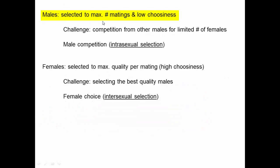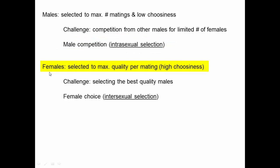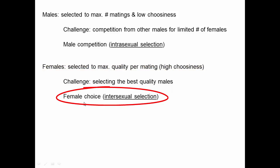So males are selected to maximize the number of matings with low choosiness, but their challenge is competition from all the other males for the limited number of fertile or available females at any particular time. Since all other males are similarly low in choosiness, males mainly face male competition with one another — intrasexual selection. For females, being selected to maximize quality per mating and having high choosiness, their challenge is not finding males because they're available, but selecting the best quality males from all those available — leading to female choice and intersexual selection, where females deal with the opposite sex in terms of maximizing their fitness.